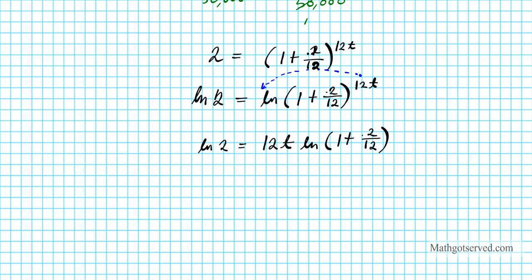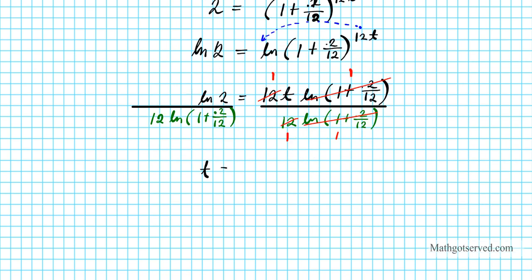So to get t isolated, I'm going to divide both sides by 12 ln of 1 plus 0.2 over 12. On the right side, 12 divides out with this 12, and the natural logarithm terms cancel. So we're left with t. Using properties of equality, I can write t equals the natural logarithm of 2 divided by 12 times the natural logarithm of 1 plus 0.2 over 12.